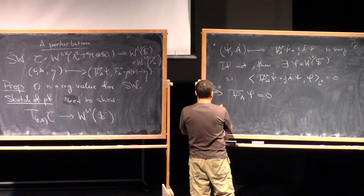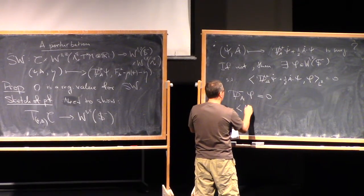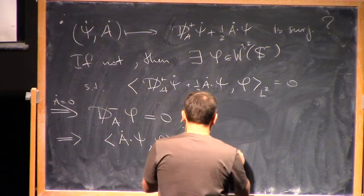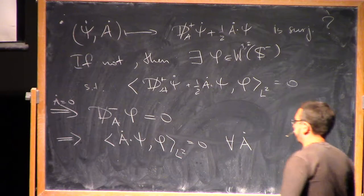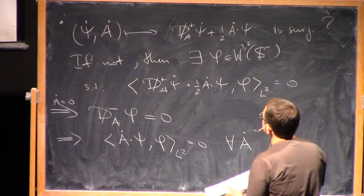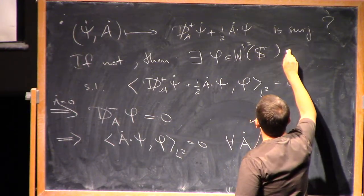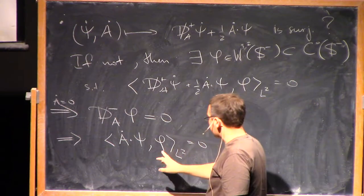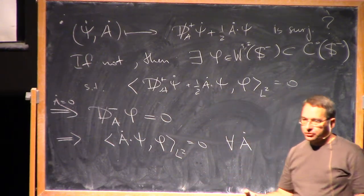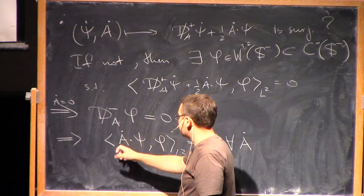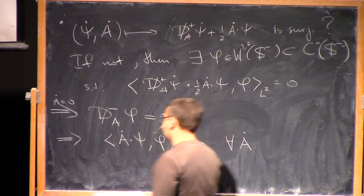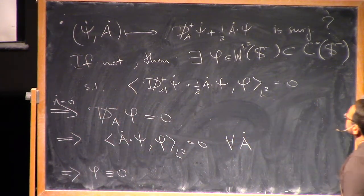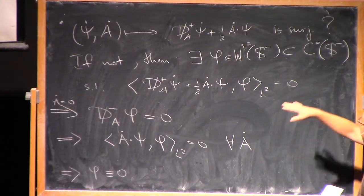In the same vein, the L^2 scalar product of Ȧ·ψ + Φ is zero, and this holds for any Ȧ. The point is I have chosen the exponent here so that we have an embedding in C^0 S^-. If you assume that Φ doesn't vanish at some point, then it doesn't vanish in the neighborhood of this point, and I can always choose Ȧ so that this will never be zero. This actually implies that Φ vanishes everywhere.